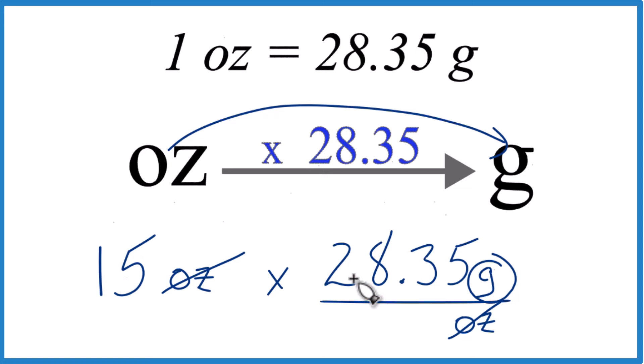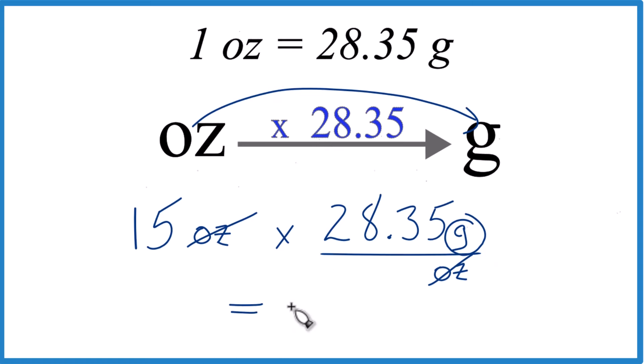So 15 times 28.35 grams equals 425.25. I'm going to call it 0.3, and the units are grams.